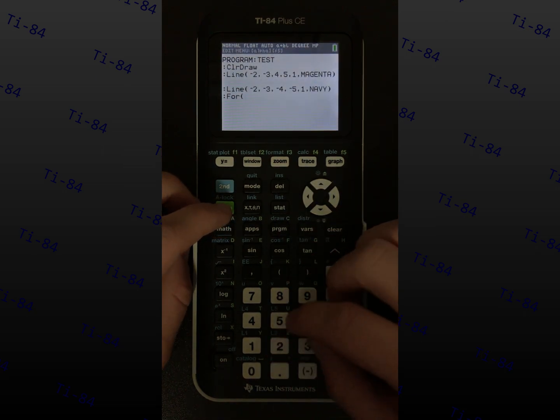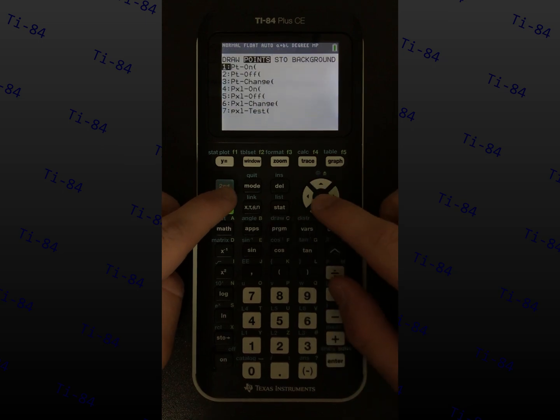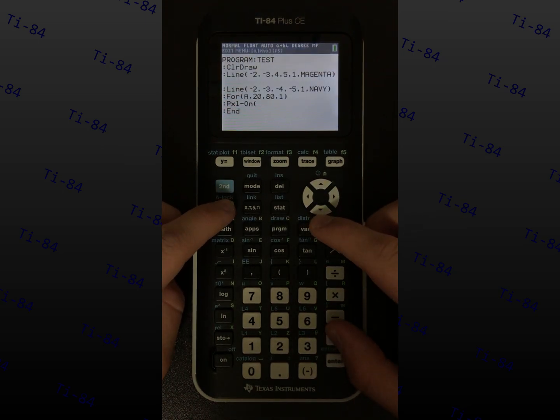If you want to color a specific pixel, type the y and x coordinates, and the color. Adding a for loop can create a line of pixels.